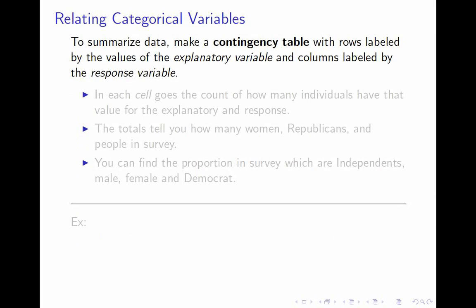So that's our example: a hypothetical study about gender influencing political party. How would you summarize the data? With one categorical variable, you could say how many individuals answered each possible answer — best expressed in proportions. Here, to summarize the data, we want the number of individuals with each combination of values of the explanatory and the response, giving us a table of numbers. We call that a contingency table.